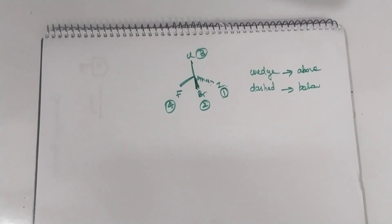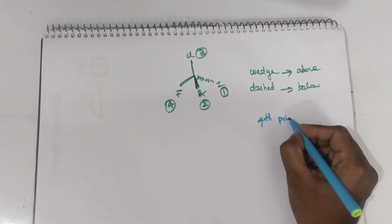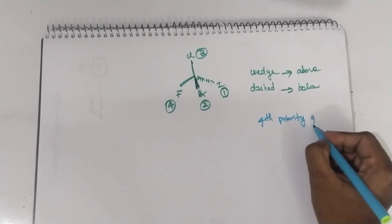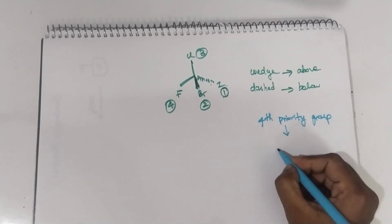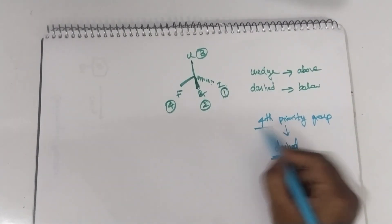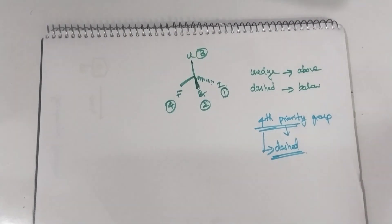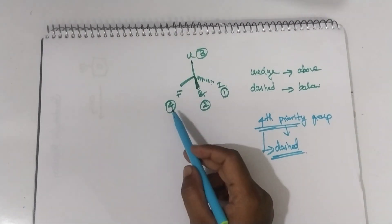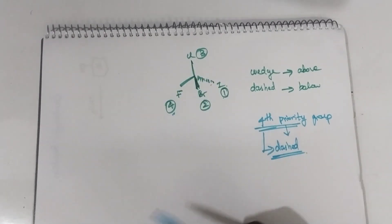Now, there is one important condition. The fourth priority group should always be present in the dashed position. In this case, however, the fourth group is present in the solid line.